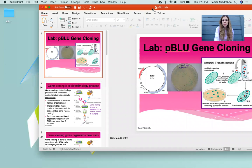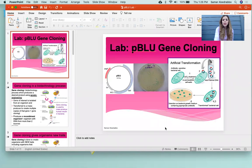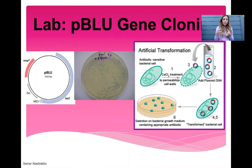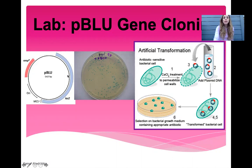The first lab you have to know is the P-Blue lab. P-Blue is a plasmid, and plasmids are extra pieces of DNA. In this lab, students were supposed to take this plasmid and put it into E. coli cells, which is called transformation. Once the plasmid is in E. coli, it gives E. coli abilities it didn't have before — resistance to ampicillin, which is an antibiotic, and the lac-Z gene, which codes for the enzyme beta-galactosidase.